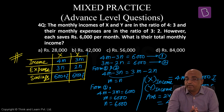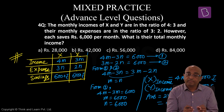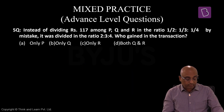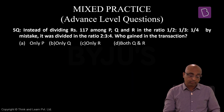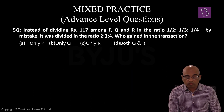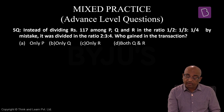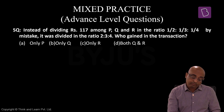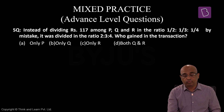Question को दो बार पढ़ना है, समझना है और basic की मदद से practice करना है। Question 5: Instead of dividing Rs 117 among P, Q and R in the ratio of 1/2 is to 1/3 is to 1/4, by mistake it was divided in the ratio of 2 is to 3 is to 4. Who gained in the transaction?